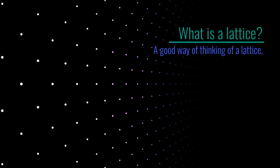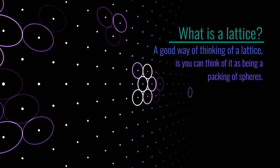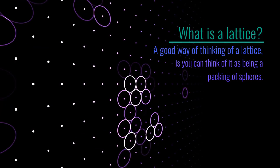A good way of thinking of a lattice is you can think of it as being a packing of spheres. So you can think of these points as being the centres of spheres, so here the spheres would look like this.